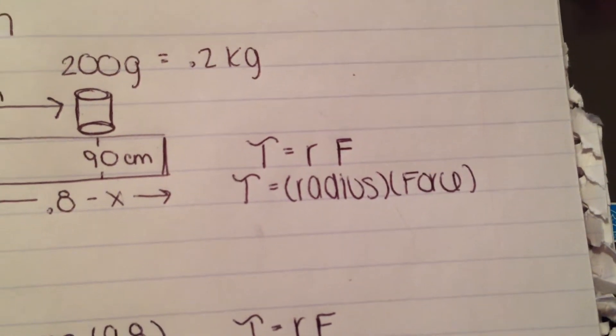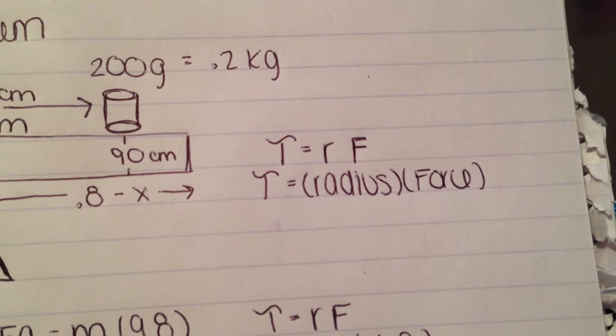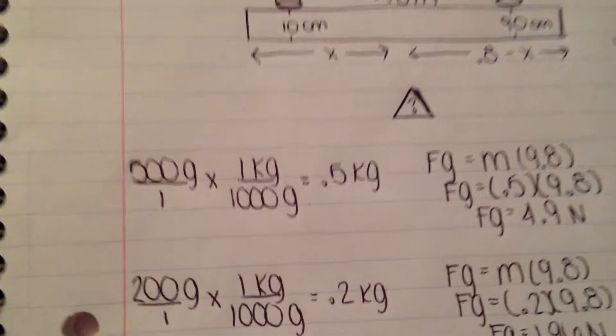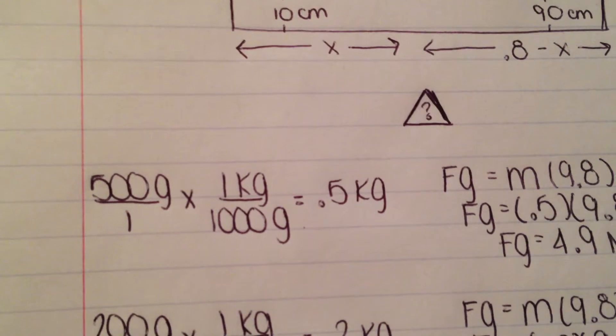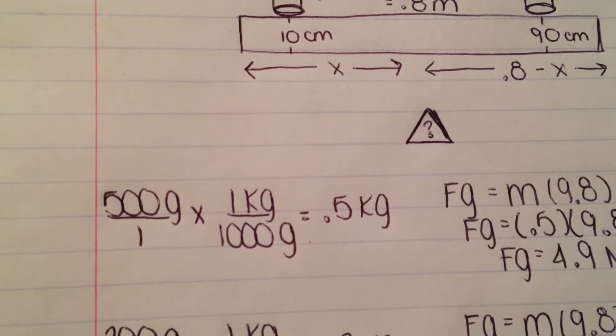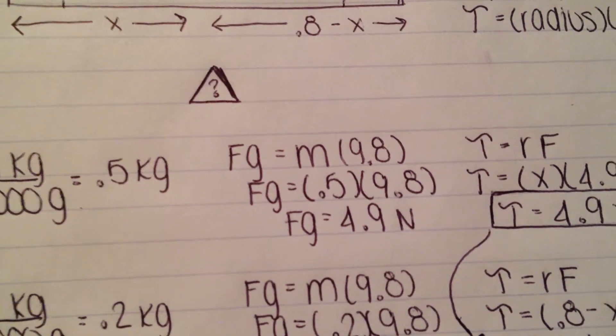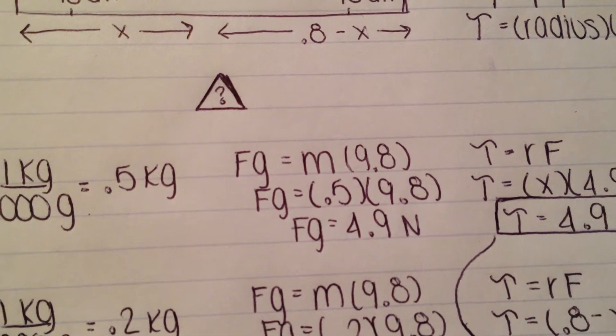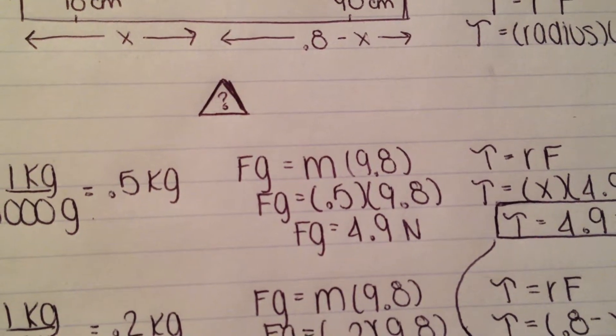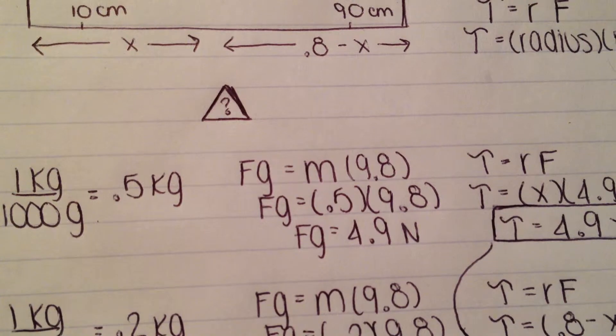Torque equals radius times force. In order to find the torque for the 500 gram mass, we need to find the force of gravity. First, we convert 500 grams into kilograms, which would be 0.5 kilograms. To find the force, you do force gravity equals mass times 9.8 because we're on earth. Plug the mass in, which is 0.5, and multiply by 9.8 and you should get 4.9 newtons.